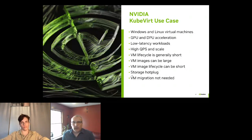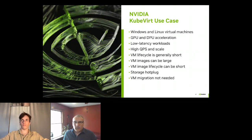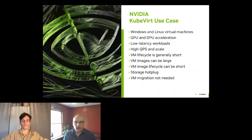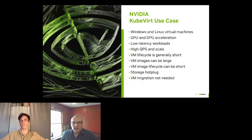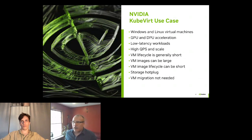Across the system, we optimize for low latency throughout, and that can be a bit at odds with running a system at such a scale with high queries per second across data centers. Another use case is that the virtual machine lifecycle is generally pretty short — there are not a lot of long-lived workloads. The images that back these workloads can be quite large and they can have high churn, to accommodate new applications, new content, and new updates. We do use storage hot plug, but currently VM migration or live migration are not required for our use cases.